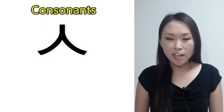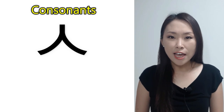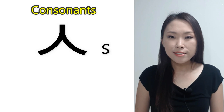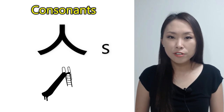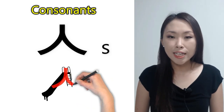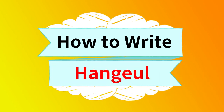The name of this consonant is ㅅ. The romanized letter for ㅅ is 's'. ㅅ sounds like the letter 's' in the word 'sun'. ㅅ, ㅅ.